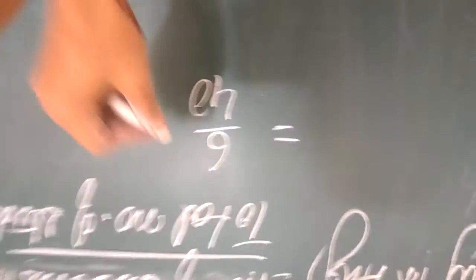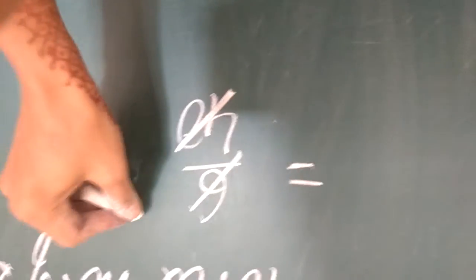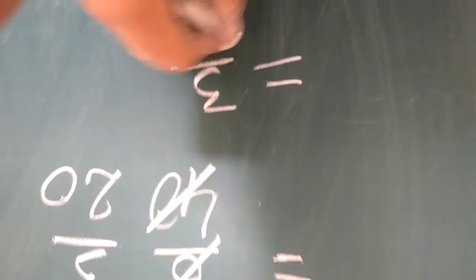So dear students, this is the solution. And by converting it into simplest form, you will get 3 by 20. So this is the probability of having the birthday in the month of August.